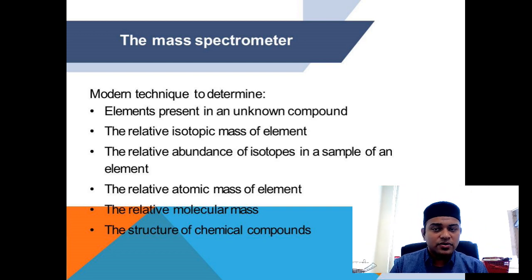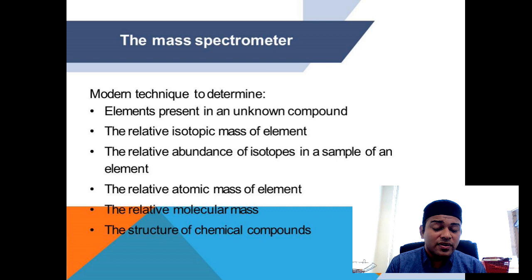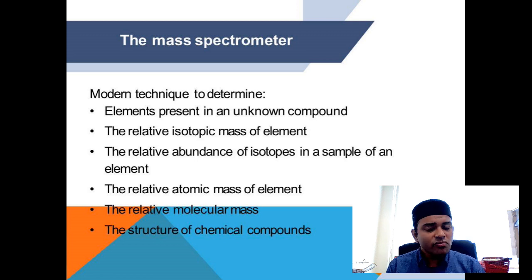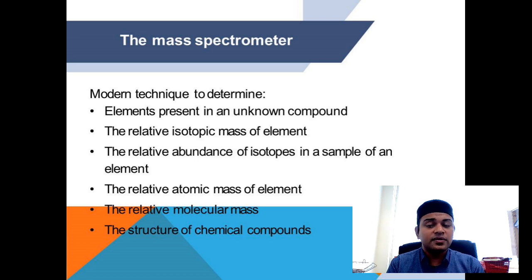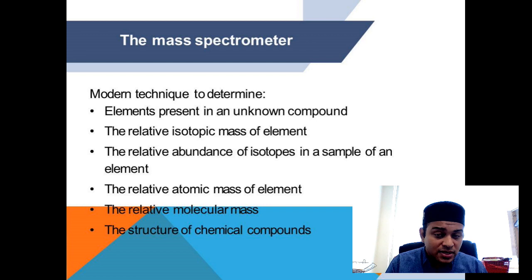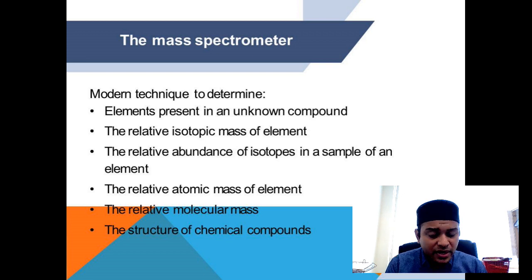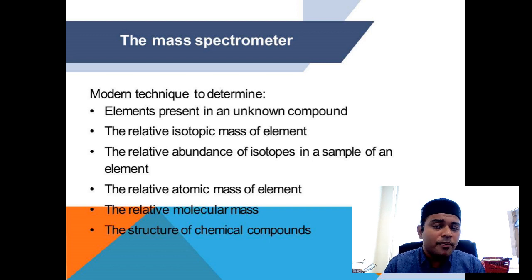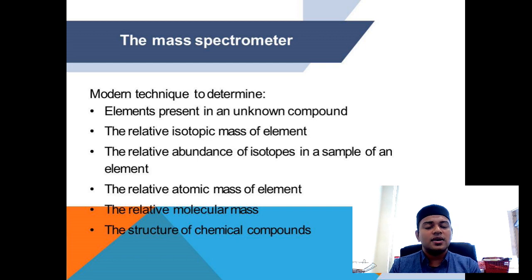The mass spectrometer is also a very good platform to interpret the structure of a complex molecule. It is one method to interpret molecular structure. As you go further you will learn other methods such as NMR (nuclear magnetic resonance), FTIR, and atomic emission spectroscopy. Those are instruments that can be combined with the mass spectrometer to review the structure of an unknown molecule.